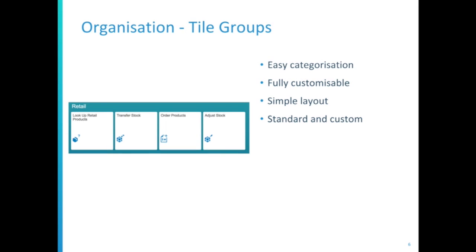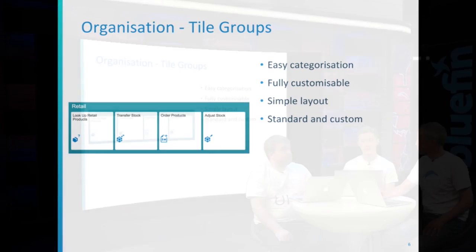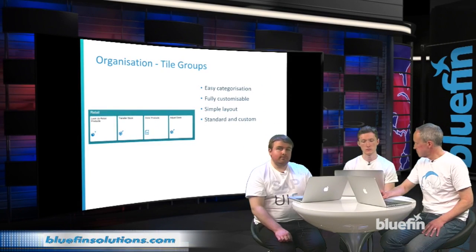There are tile groups. Rather than just flinging a load of tiles at your screen, you can organize those tiles into groups, which obviously makes things a lot easier to navigate and understand. Much like your desktop, the launchpad is a collection of things which are important to you, and tile groups mean you can categorize those into nice, simple, relevant groups. It also keeps it easily scalable for viewing on a phone instead of a computer. The groups are fully customizable, and you can put any tile in as many groups as you want if it fits into multiple categories.